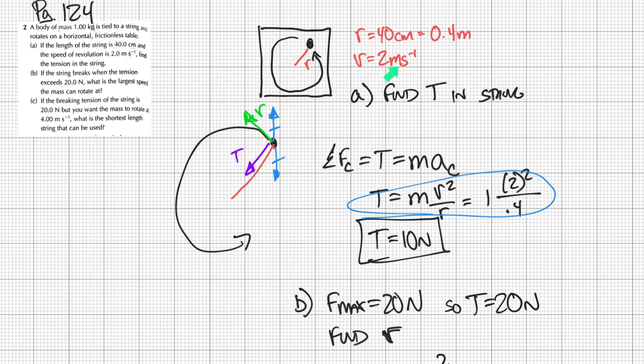And then it has a velocity of two meters per second. And the first thing it says is if the length is 40 centimeters, speed is two meters per second, find the tension in the string.